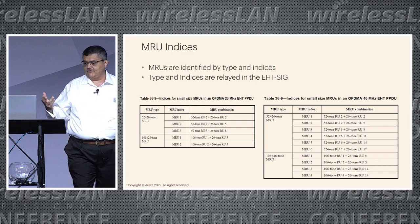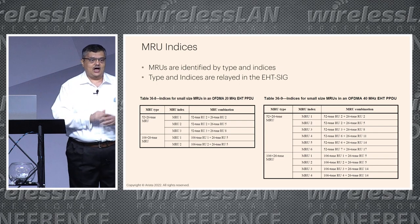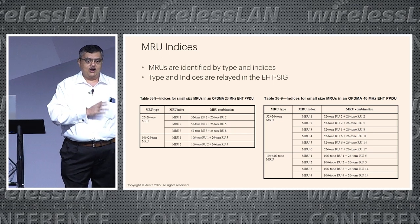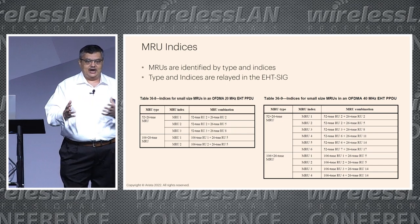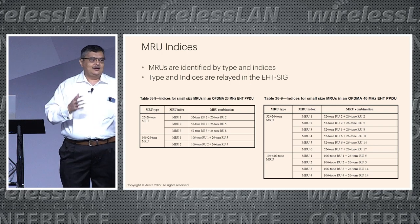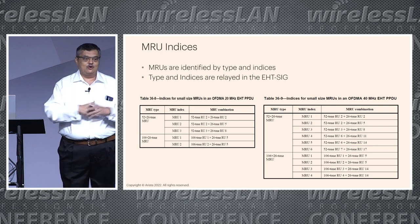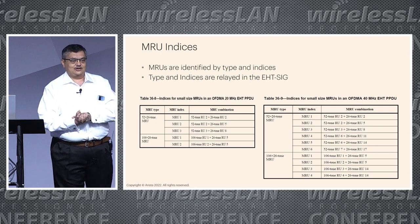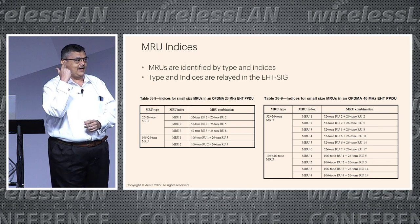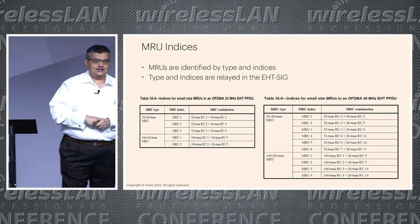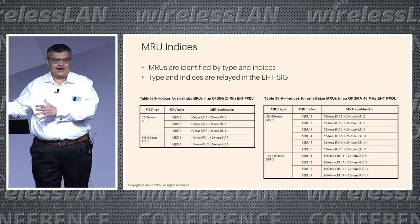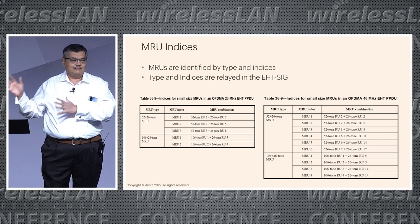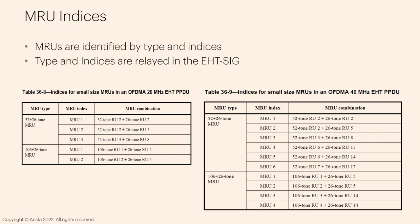Every time I read the spec, I always feel: oh, now I understand how it's done — the MRU index and MRU type, when I combine these two, I know what you're going to get. Then I close the PDF, start to think back, and I don't remember anything. There are just way too many combinations. But somebody will write firmware or microcode for this, and then I don't ever need to remember it — so that's the good part.